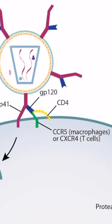When a patient is exposed to HIV through bodily fluids, such as blood or sexual exposure, the virus infects T-cells and macrophages. Notice that HIV uses GP120 to interact with the CD4 receptors. Most of the time when you think of CD4 receptors, you think of T-cells, but macrophages also have CD4 receptors.